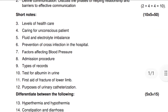Next question — 5 marks each: Levels of health care; caring for unconscious patient; fluid and electrolyte imbalance; prevention of cross infection in the hospital; factors affecting blood pressure; admission procedure; types of records; test for albumin in urine; first aid for fractures of lower limb.